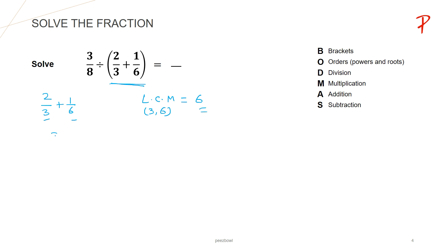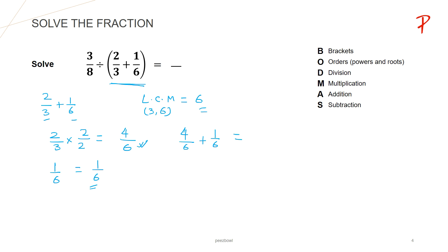For 2 upon 3, to make the denominator 6, I multiply both numerator and denominator by 2: 2 multiplied by 2 is 4 and 3 multiplied by 2 is 6. For 1 upon 6, we already have 6 at the denominator's place. So the addition becomes 4 upon 6 plus 1 upon 6, which equals 4 plus 1 is 5, and the denominator is 6.